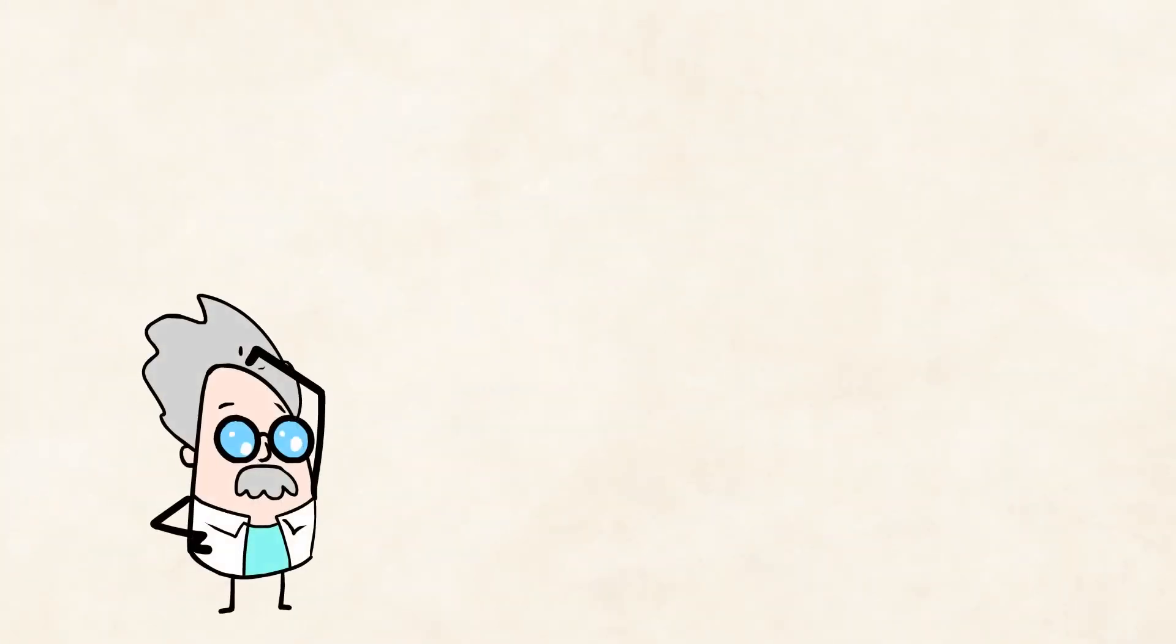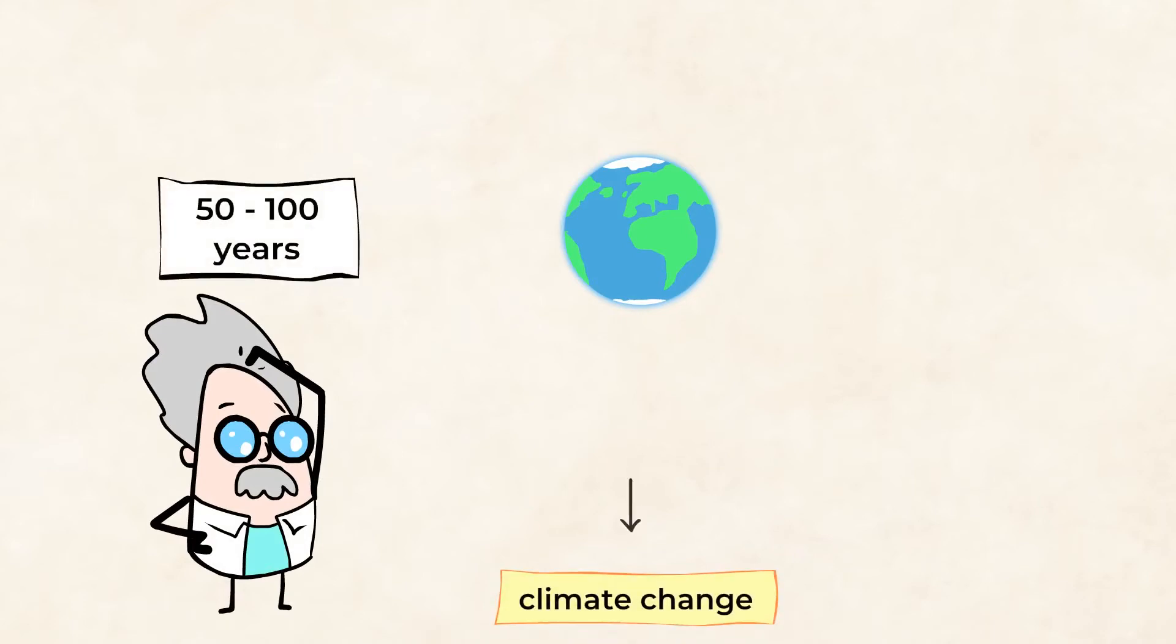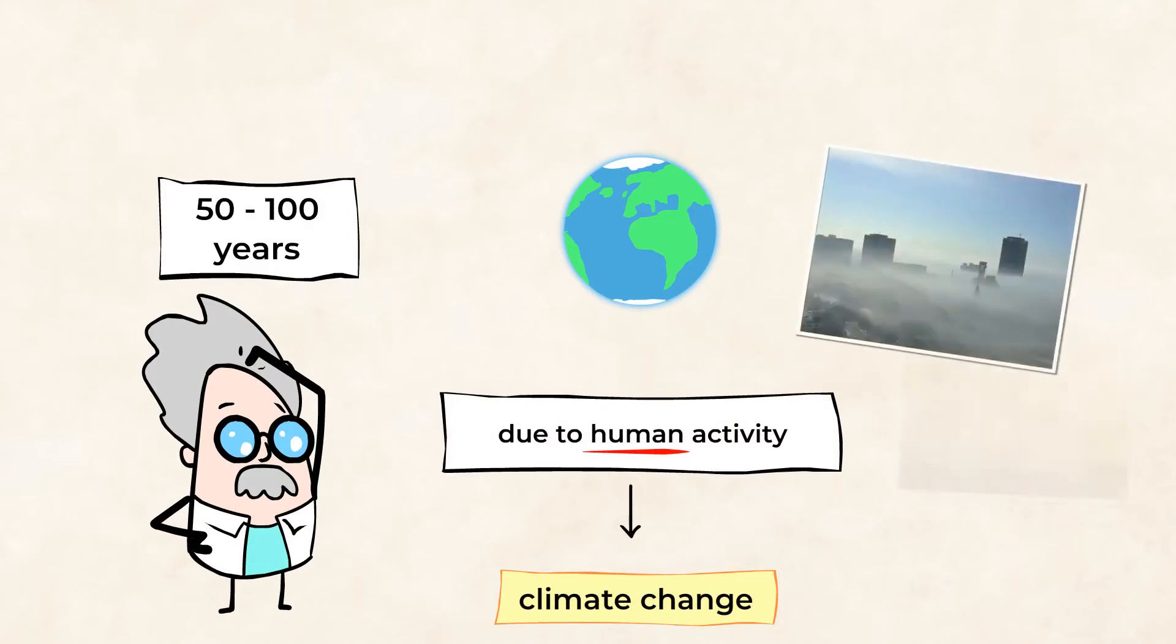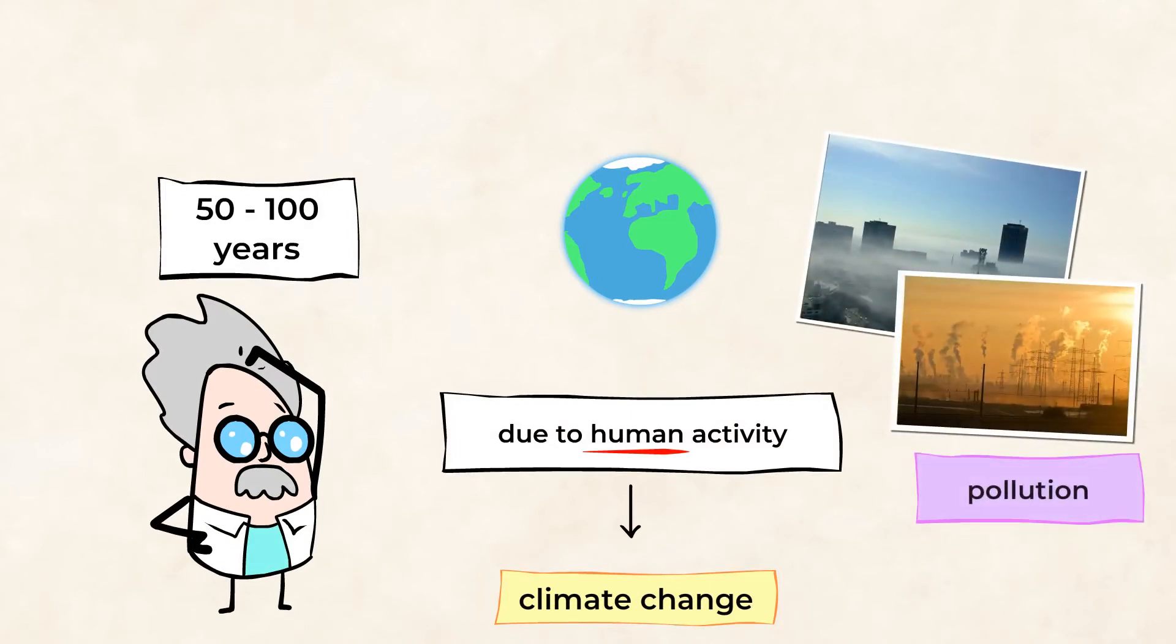There are so many things that contribute to the planet's climate. Scientists know that in the past 50 to 100 years, a lot of the climate change has been due to human activity. We're building up pollution inside of our atmosphere. Imagine that.